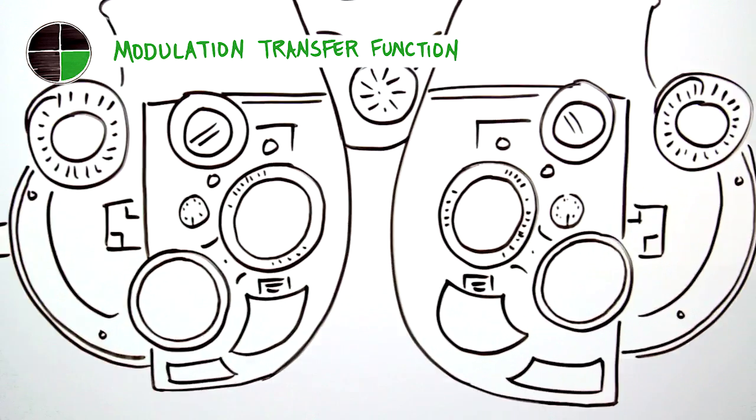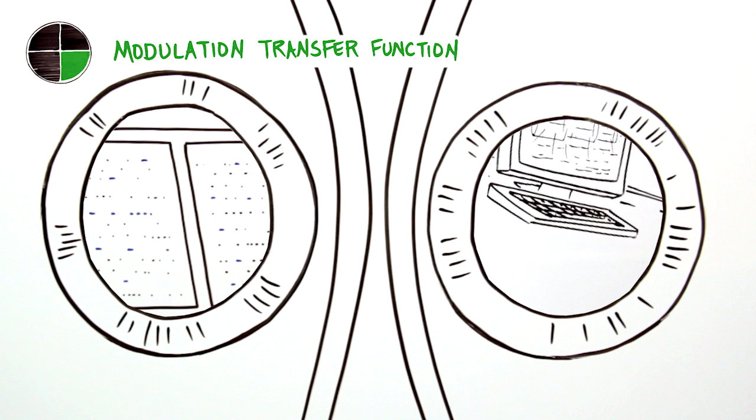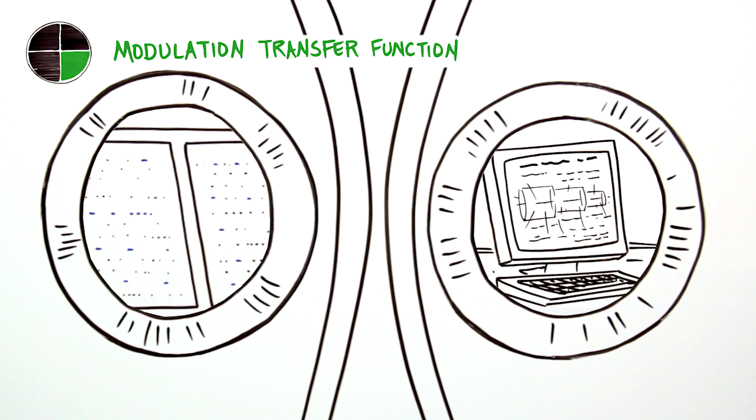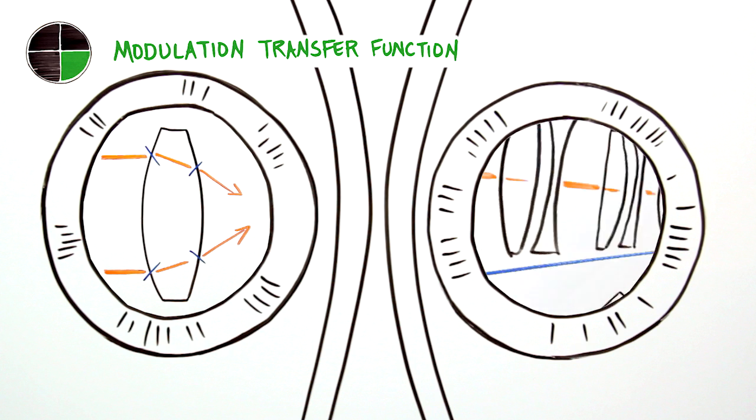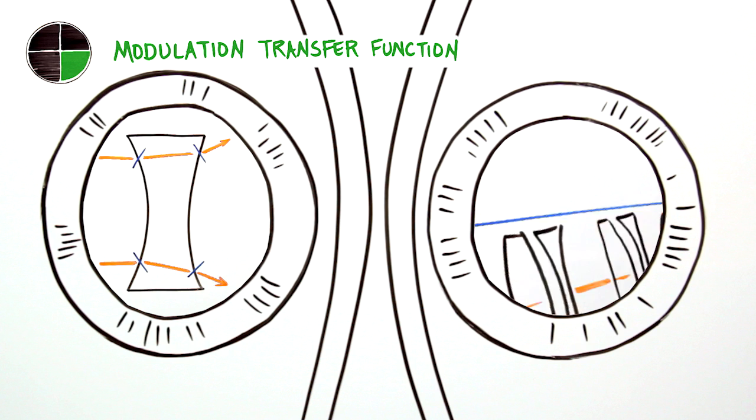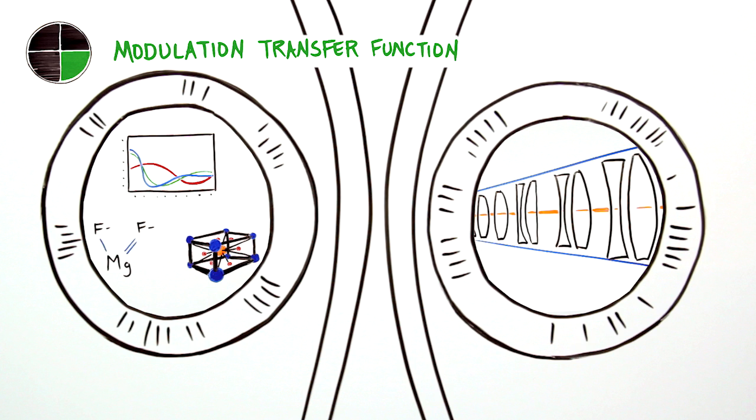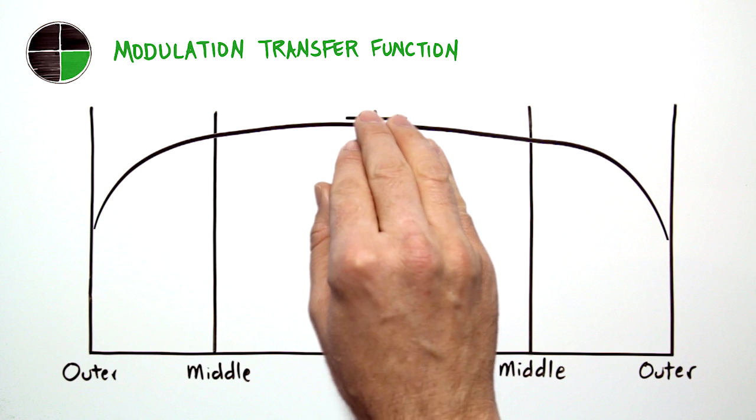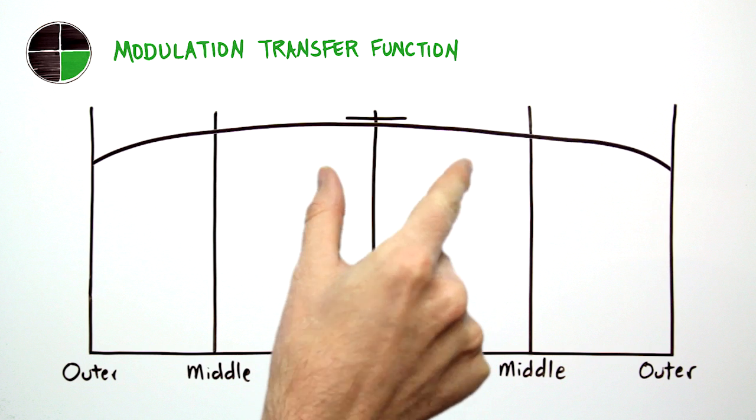Fortunately, Canon has designed powerful computer simulations to help combat critical MTF challenges that allow us to explore the countless ways to combine lens elements, including their shapes, groupings, and materials. This lets us maximize MTF at the center and at the outer areas of the image.